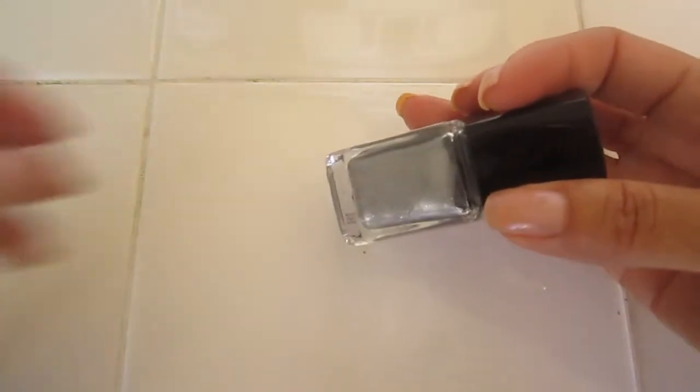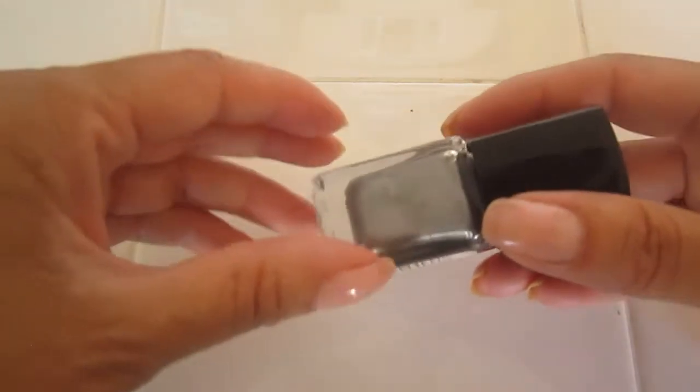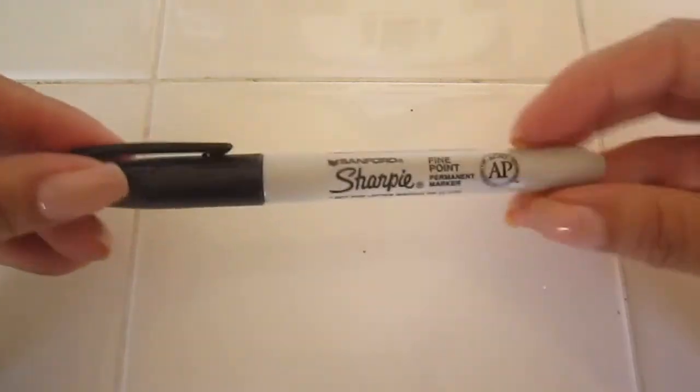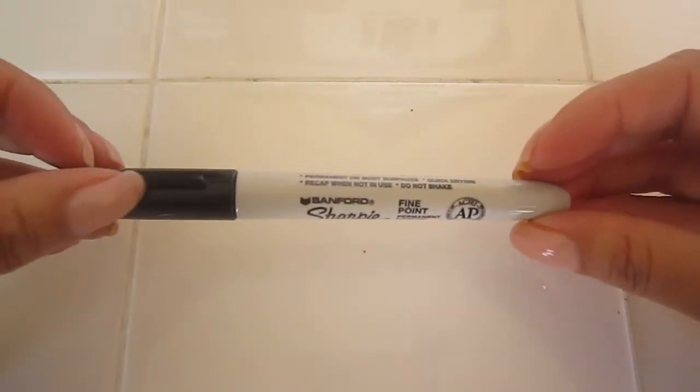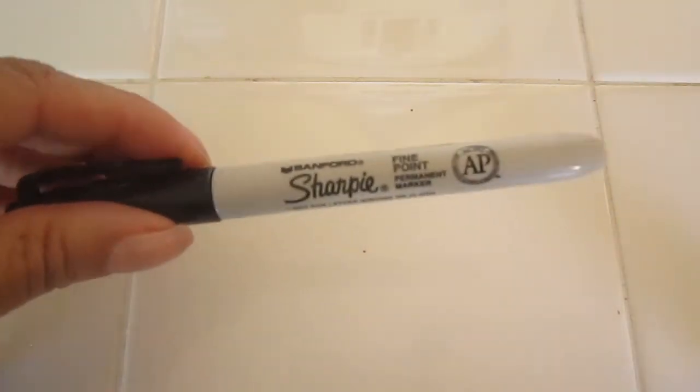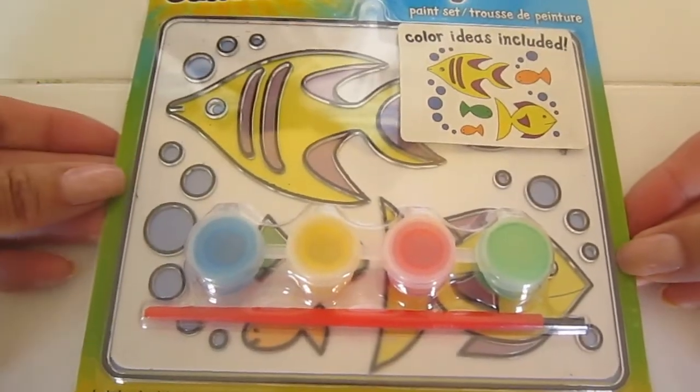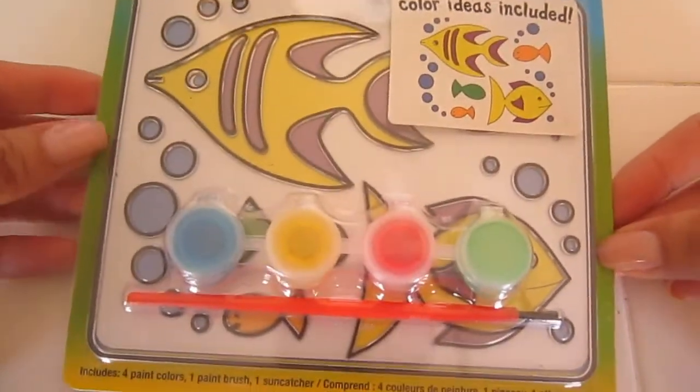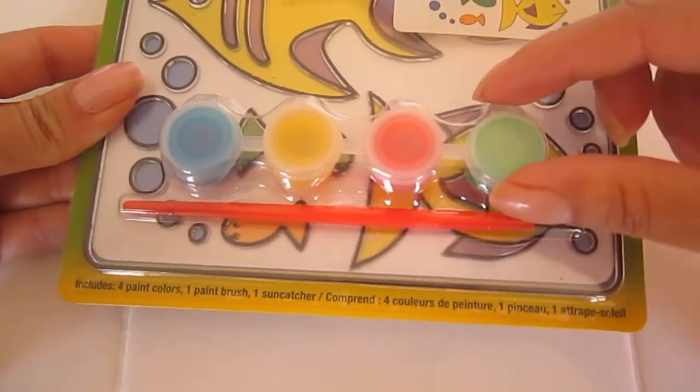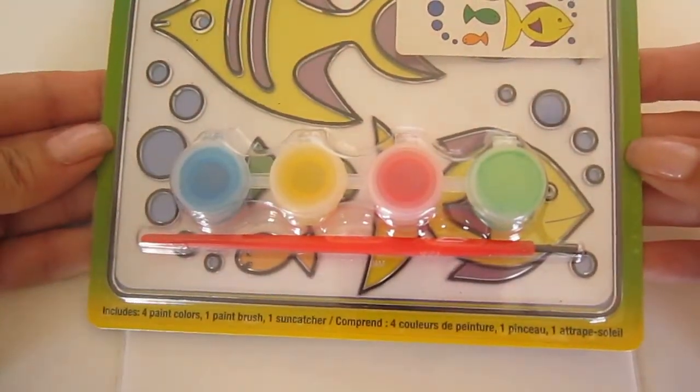Nail polish or any paint that you may have around the house. Don't buy anything because you're going to really use very, very little. A sharpie. Sharpies now come in many different colors, gold tone. You can use whatever you want. I got these two for a dollar. So these are a steal. But what I found is that these colors actually are gel, and these are perfect to create a Tiffany lamp style effect.